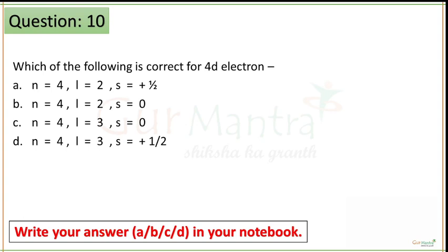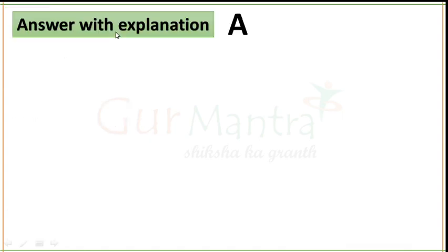Time up guys. You have to tell which of the following is correct for 4D electrons — specifically the set of quantum numbers where N, L, and S are given. For 4D electrons, the principal quantum number N should be 4, and all options have N = 4. For the D subshell, the value of L should be 2. Options C and D have L = 3, so they are wrong. For any subshell, the value of S should be +½ or −½ — it cannot be 0. In option B the value of S is 0, so option B is also wrong. The correct option is option A. Question number 10 has the correct answer as option A.